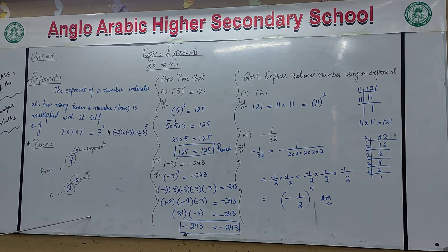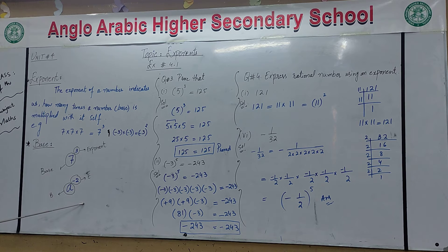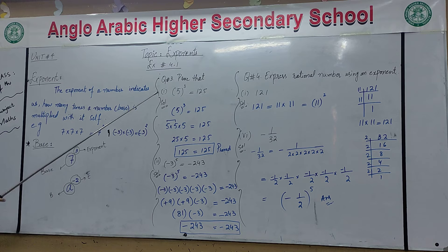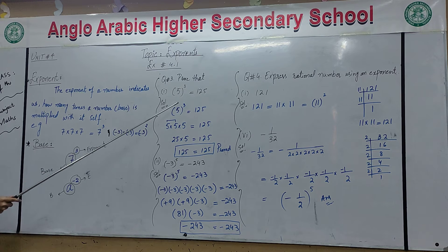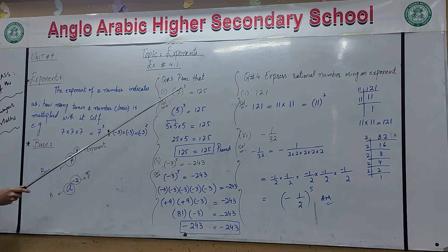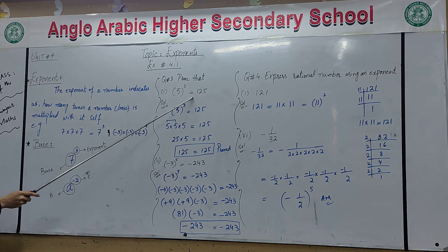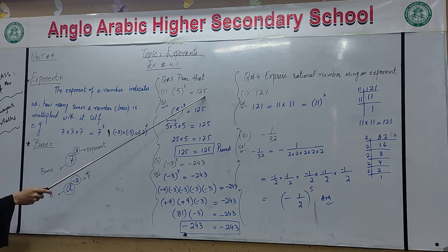Next, Exercise 4.1, question number one and question number two follow the same method — you have to indicate the exponent and the base. Next, question number three: you are given the statement that five to the power three is equal to one hundred and twenty-five, meaning when you multiply five three times it gives one hundred and twenty-five. You have to prove this.